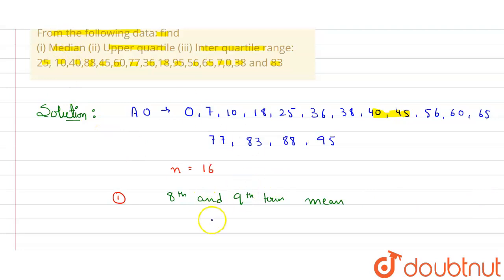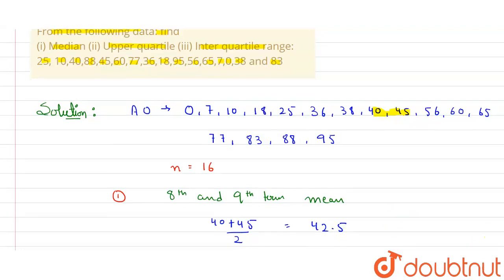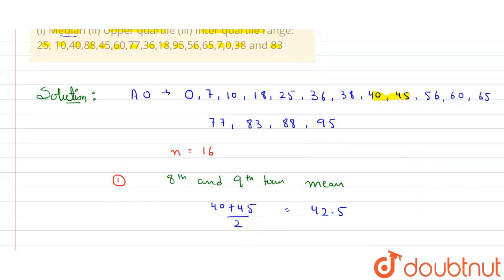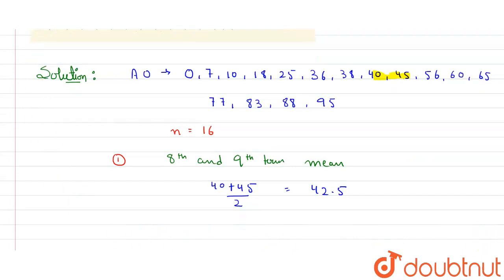So how to find mean here? 40 plus 45 divided by 2, it will be equal to 42.5. So median is 42.5. We are done with part one.